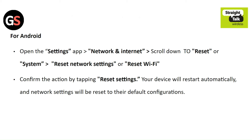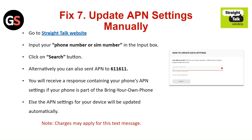For Android, open the Settings app, then Network and Internet. Scroll down to Reset or System. Select Reset network settings or Reset Wi-Fi. Confirm the action by tapping Reset Settings, and your device will restart automatically and network settings will be reset to their default configurations.